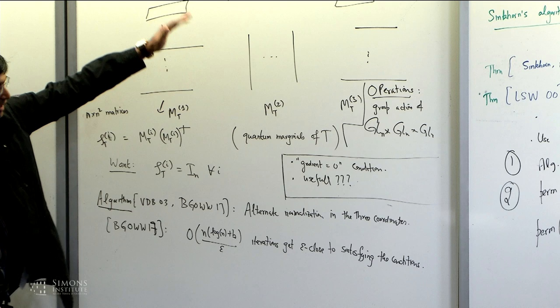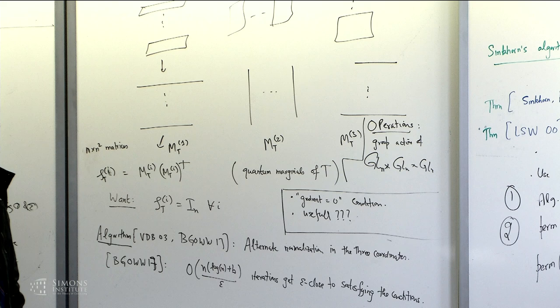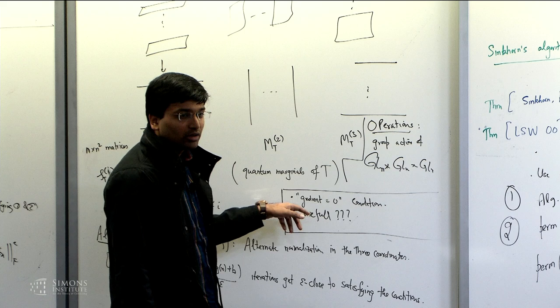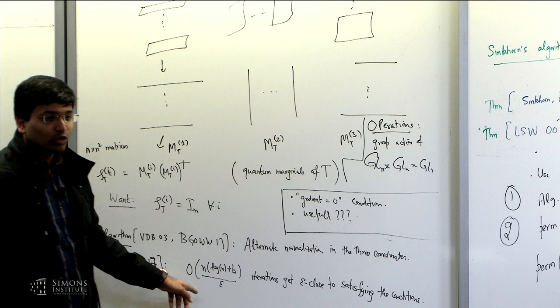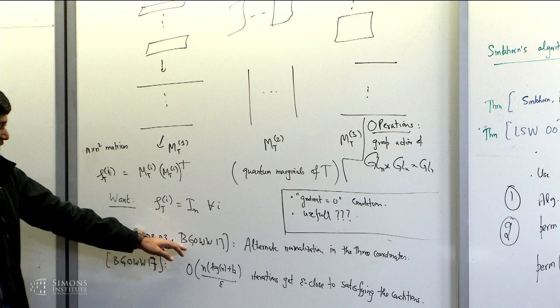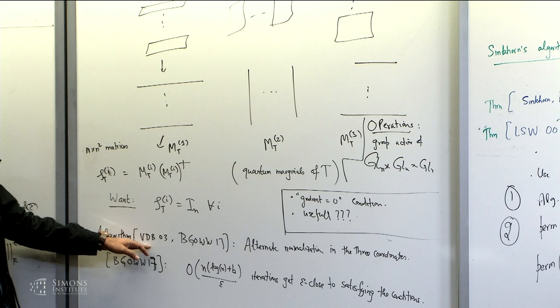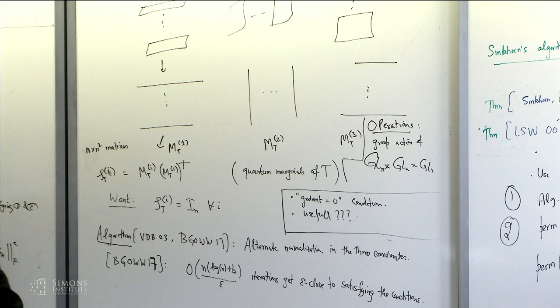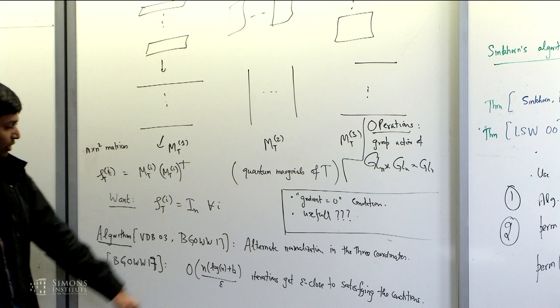Does this have applications for the null cone membership problem? We are minimizing the norm-squared thing, but to solve the null cone problem, you'd want the algorithm to have logarithmic dependence on 1/epsilon. We proved that in N log N over epsilon iterations, you get epsilon-close to satisfying the tensor scaling conditions. We don't solve the null cone problem because we only achieve polynomial dependence in 1/epsilon, not logarithmic.